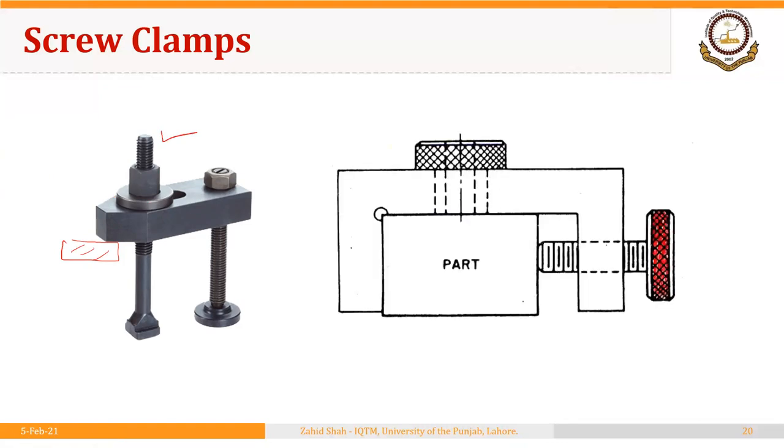But a screw can be used separately as well to hold a workpiece in a jig or fixture. This is the example of the jig that we have seen many times. A screw is being used through the body of the jig to hold the workpiece into position.